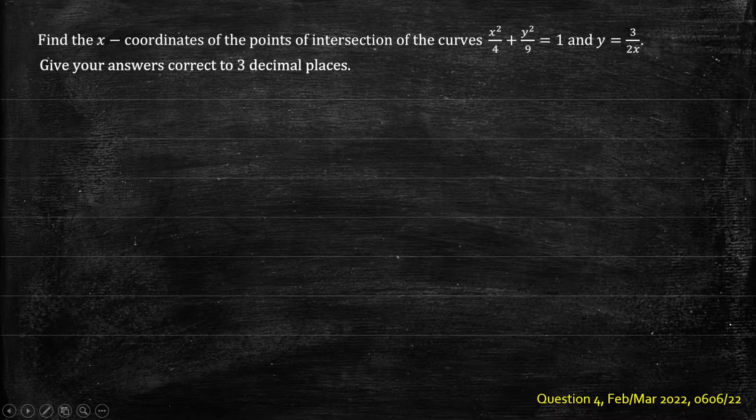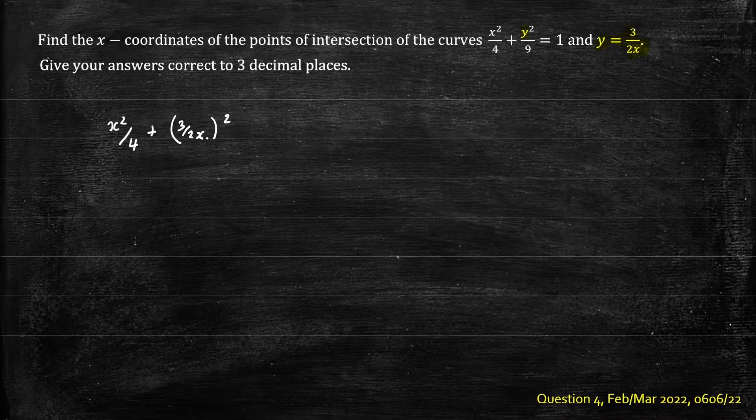This question can be solved using a substitution method. We note in the second equation we have y equals 3 on 2x and we have y in the first equation. In the first equation we'll replace y with 3 on 2x. So we have x squared on 4 plus y which is 3 on 2x all squared on 9 equals 1.